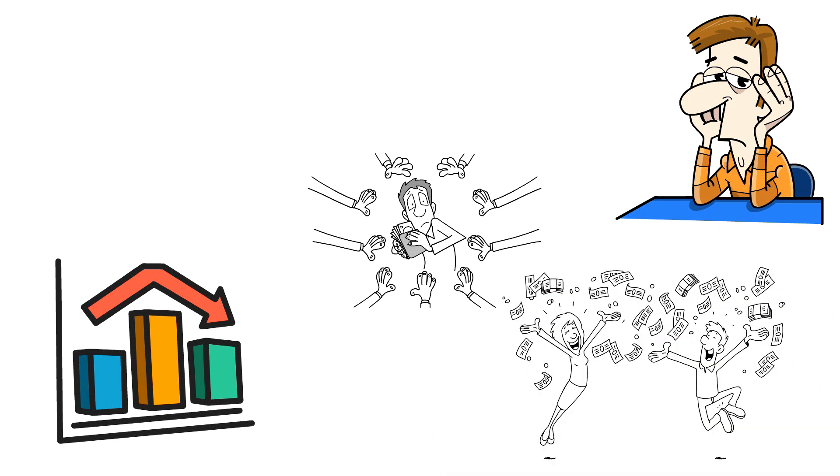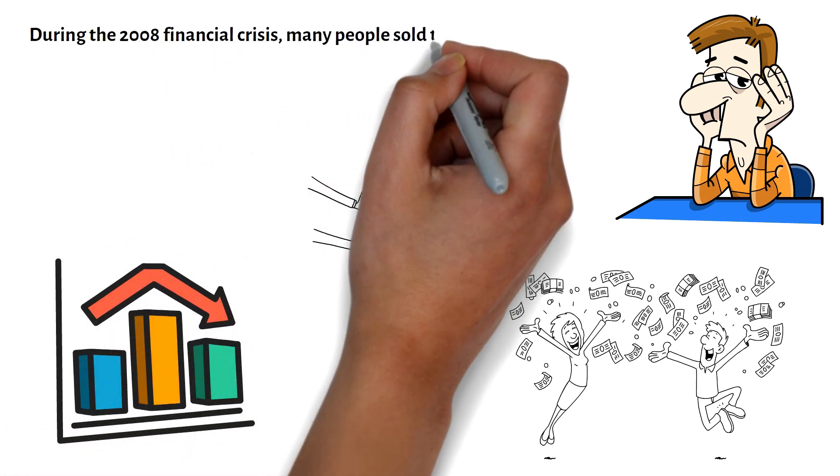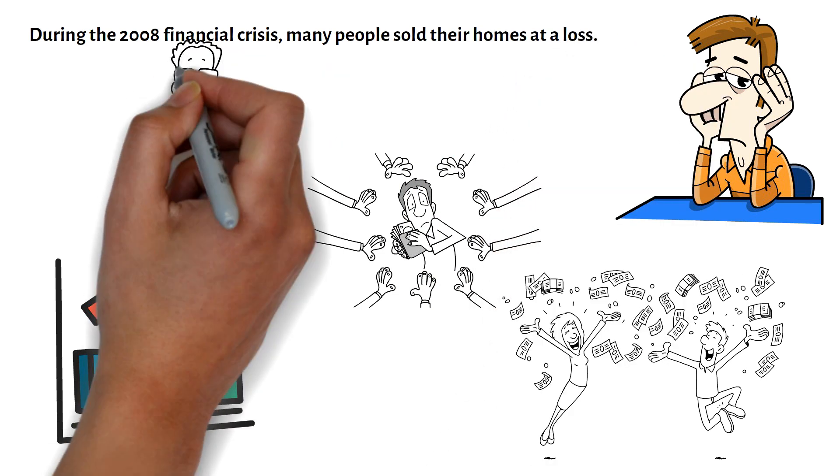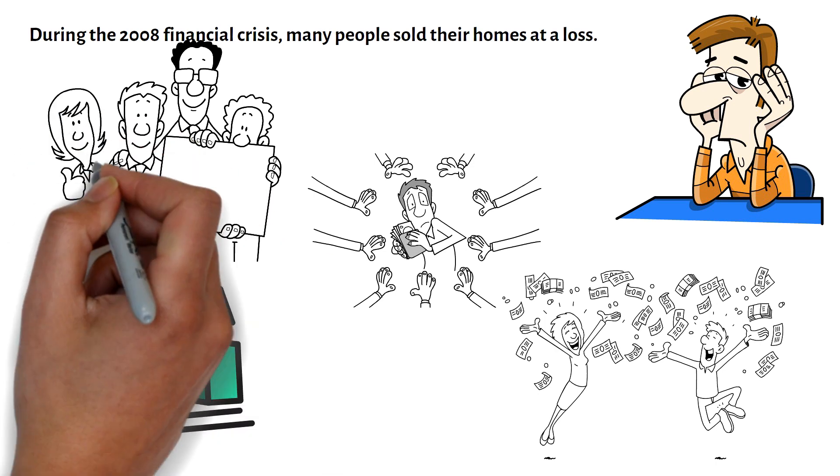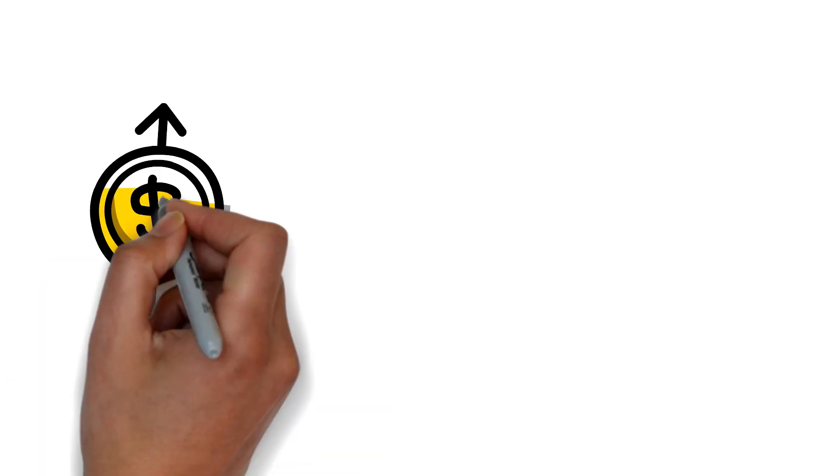The same principle applies to the housing market. During the 2008 financial crisis, many people sold their homes at a loss. However, savvy investors recognized that the housing market would eventually recover and saw an opportunity to purchase undervalued property. As the market improved, they were able to sell their investments for a substantial profit.